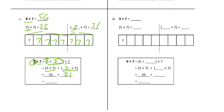Now we're looking at nine sevens. We have five sevens — that's 35. Do you know that five times seven is 35 yet? Because we've been drilling it while doing all this. Four sevens is one more seven than 21, so that's 28. We have 35 plus 28, and we come up with 63.